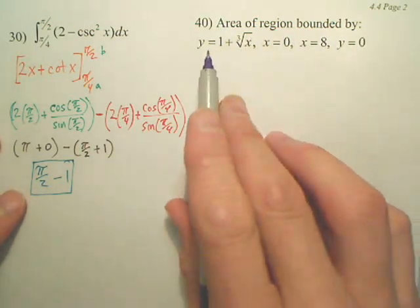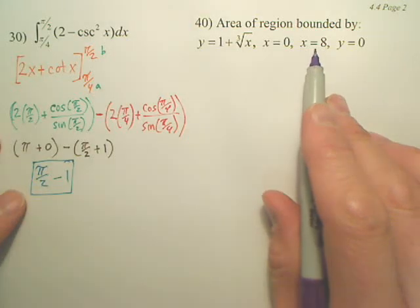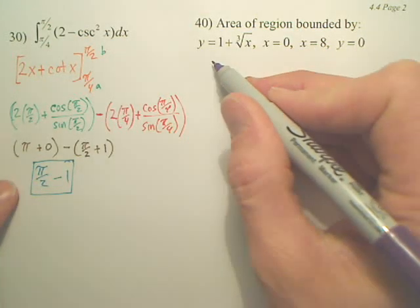If we're going to find the area of the region bounded by this graph, x equals 0, x equals 8, and y equals 0, let's make a quick little sketch.